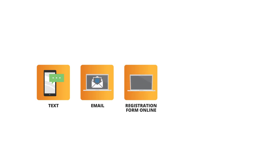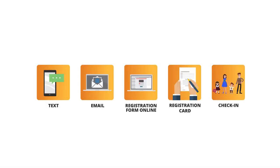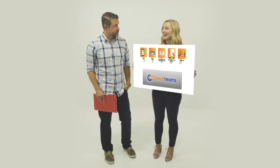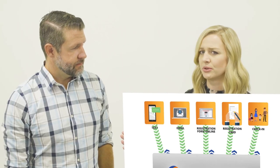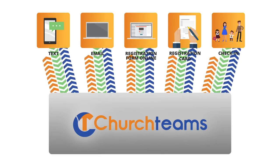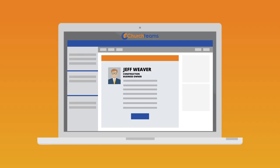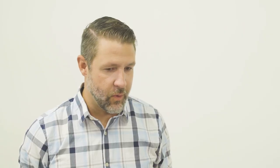Information comes into our church in a number of ways — text message, email, registration forms, bulletins, or check-in. It was a challenge to get that all in one place, but Church Teams does it easily. With Church Teams we can communicate back to members through automated responses by text and email. For example, we can organize groups and send schedule notifications — and here's Jeff Weaver's profile: he's in construction and owns his own company.